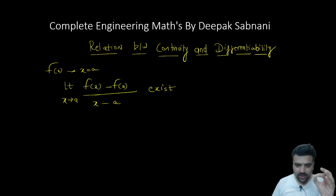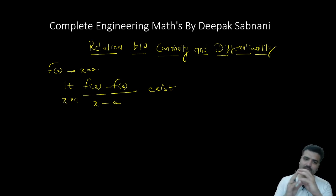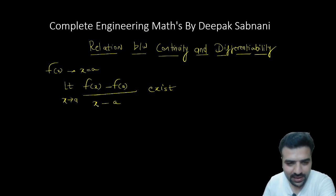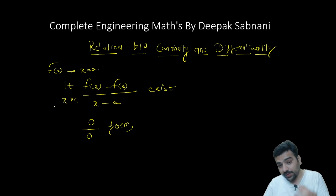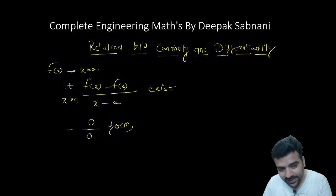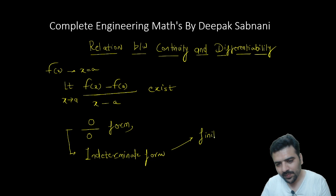Now if I want to evaluate this limit, first I put in the value. Substituting x = a gives f(a) minus f(a), which is 0 divided by 0. So we get a 0 by 0 form, which is an indeterminate form. An indeterminate form may give you a finite value, meaning the limit exists.